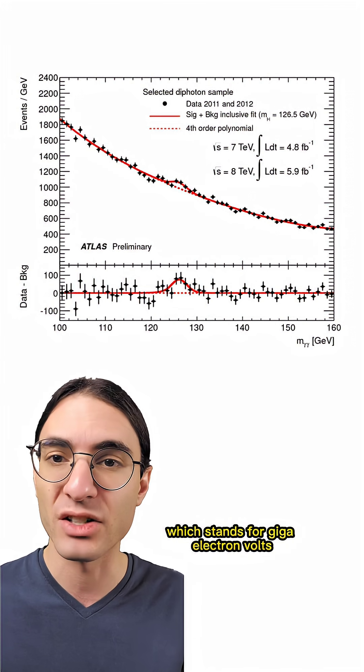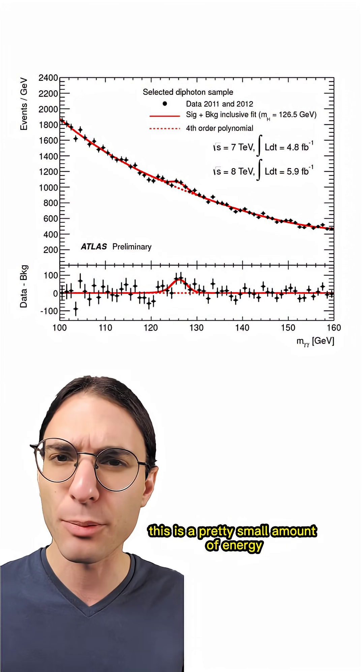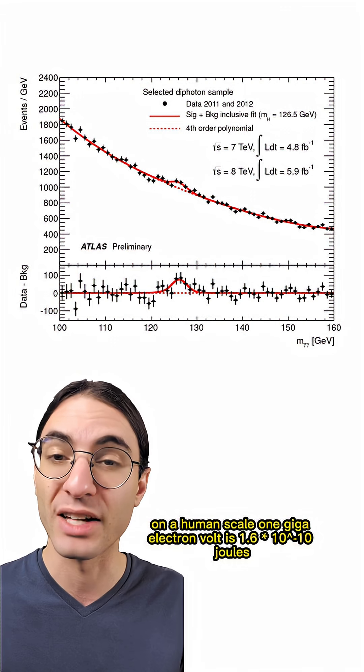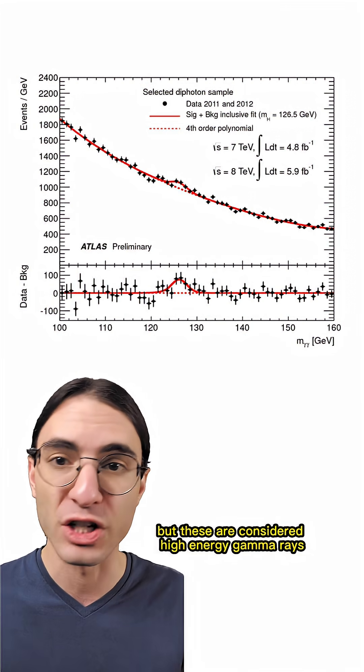The units are GeV, which stands for gigaelectron volts. This is a pretty small amount of energy on a human scale. One gigaelectron volt is 1.6 times 10 to the minus 10 joules, but these are considered high energy gamma rays.